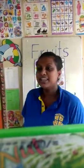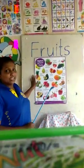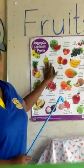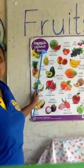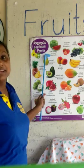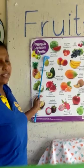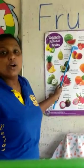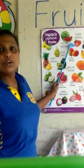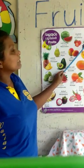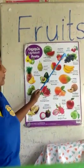Now look at the board. Here you can see some other fruits. You know this one very well — watermelon, from that song. Strawberry. Strawberry. Cherry. Cherry.